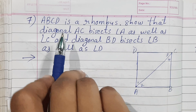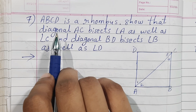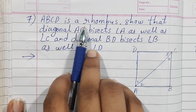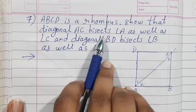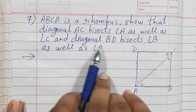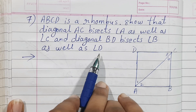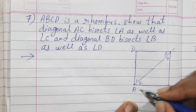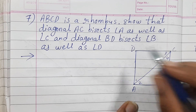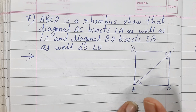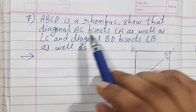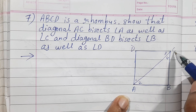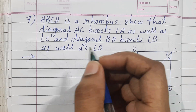The question is taken from Class 9 Quadrilaterals. Write down the question: ABCD is a rhombus. You have to show that diagonal AC bisects angle A as well as angle C, and diagonal BD bisects angle B as well as angle D. For a rhombus, we know the property that all sides are equal. Let us prove the first part.